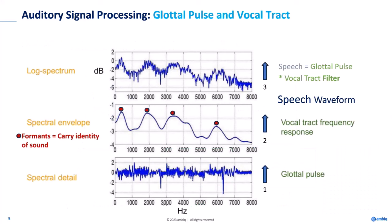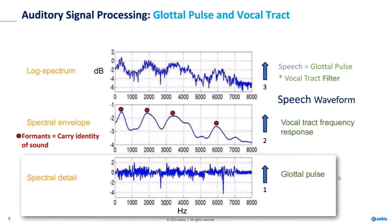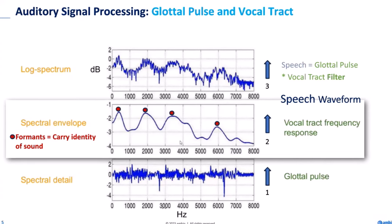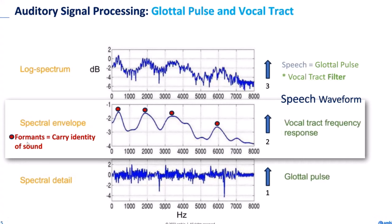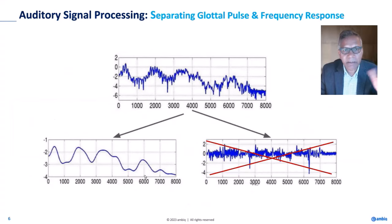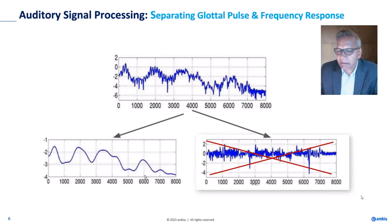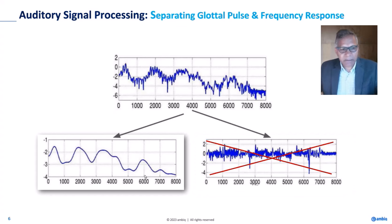Now let's see how we process it — how the machine understands it. We have glottal pulses and the vocal tract frequency response, which is basically a formant that carries the identity of sound waves. When the glottal pulses come through the mouth, they modify this wave, and that's where speech is produced. Our goal is to separate the glottal pulses from the filter's transfer function and extract features. In auditory signal processing, when feeding information to a machine, we are not interested in the glottal pulses themselves — we want to separate them from the filter that modifies speech.